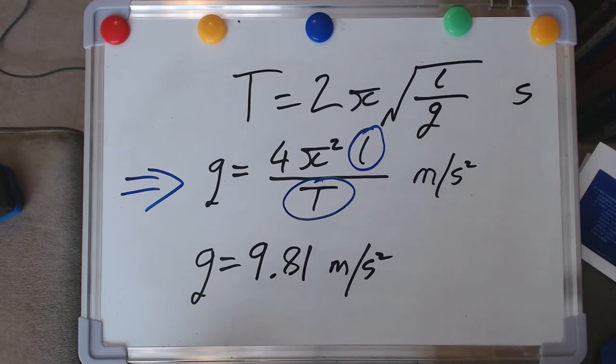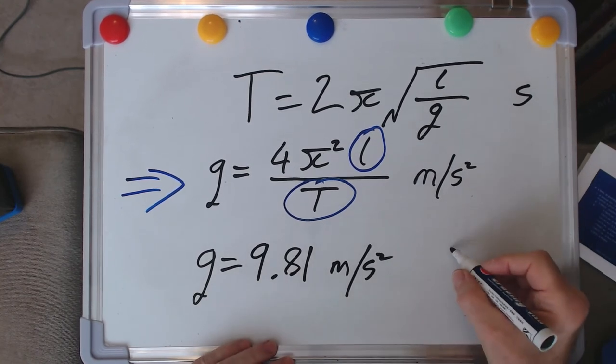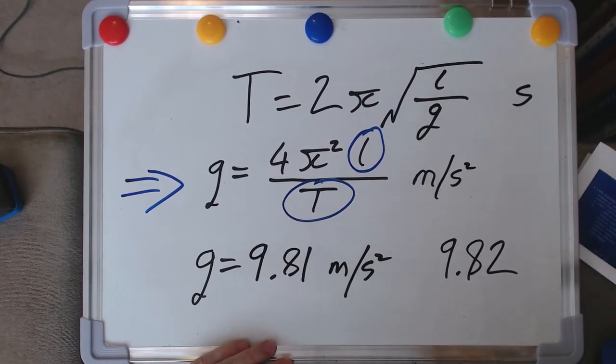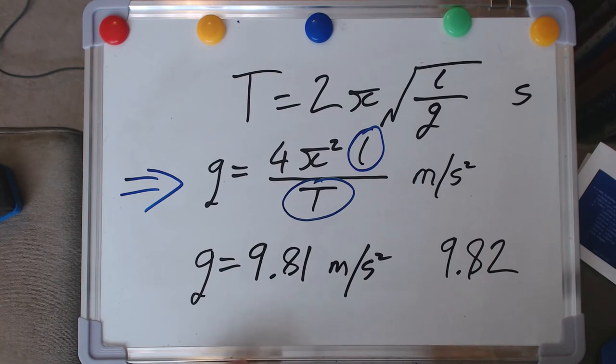But if we go further north, so for instance, we go to Edinburgh, this number becomes much more closely approximated by 9.82 meters per second squared.